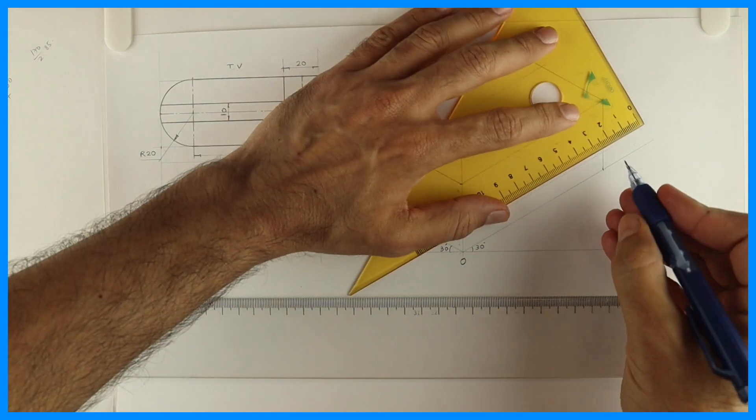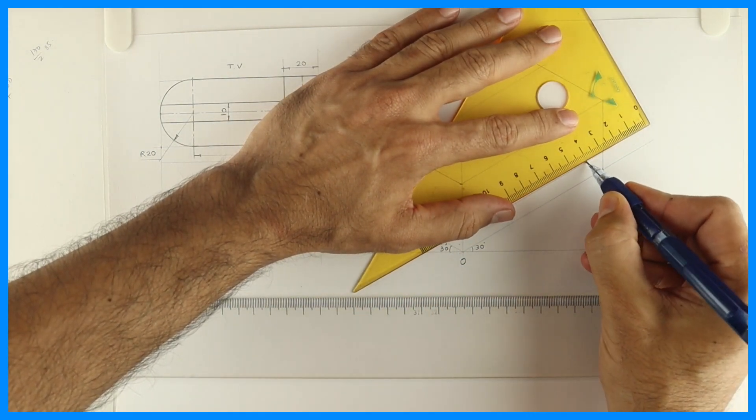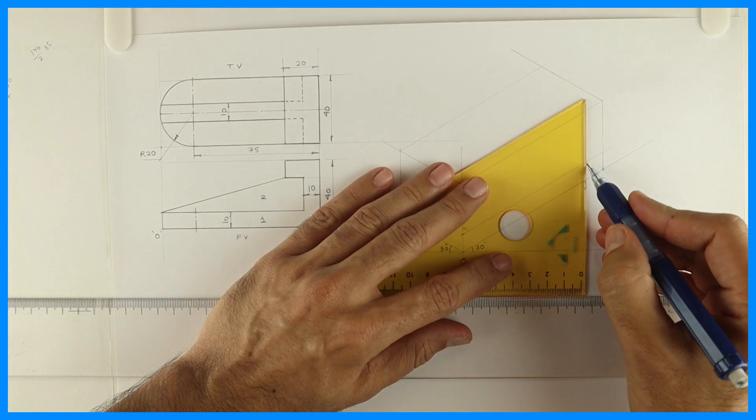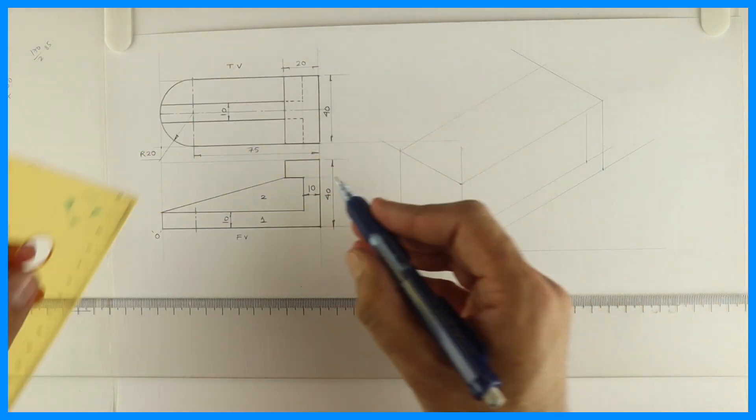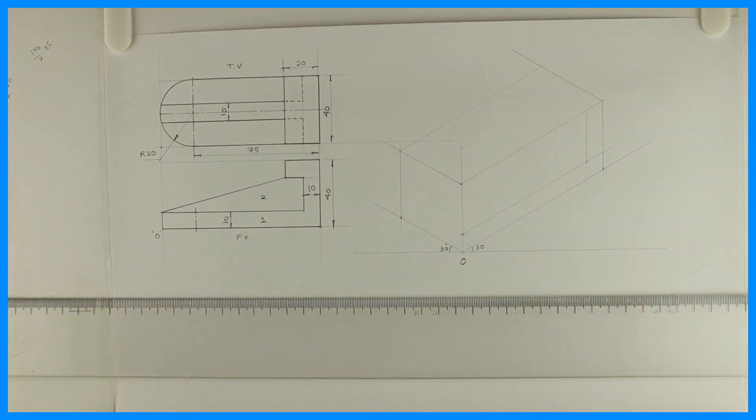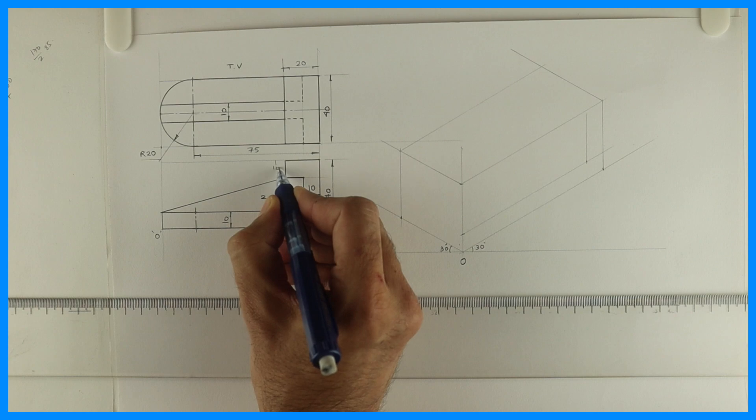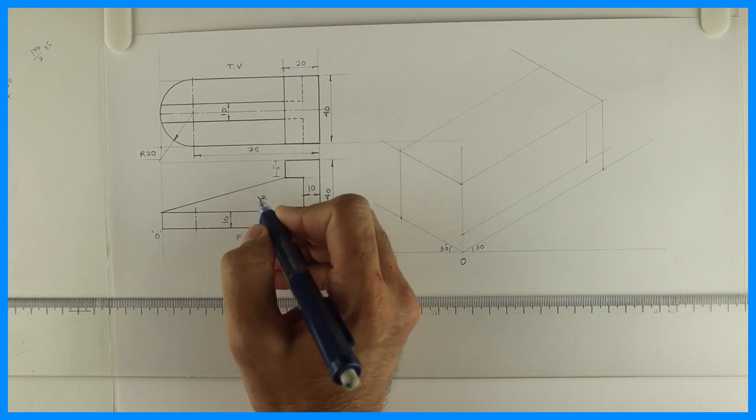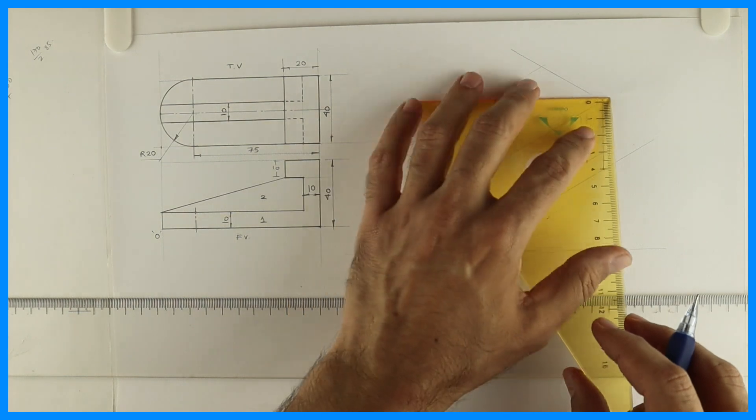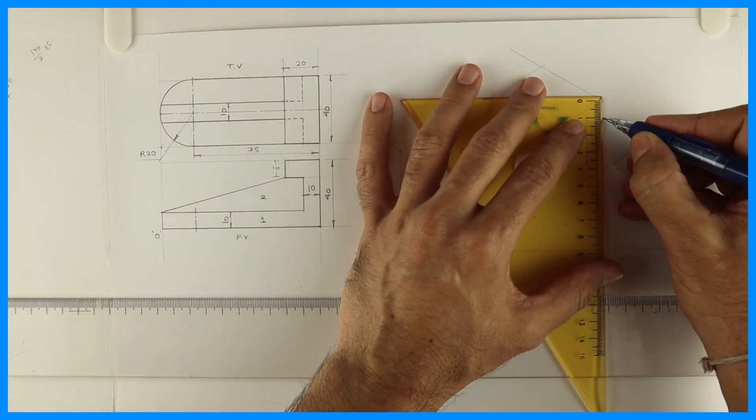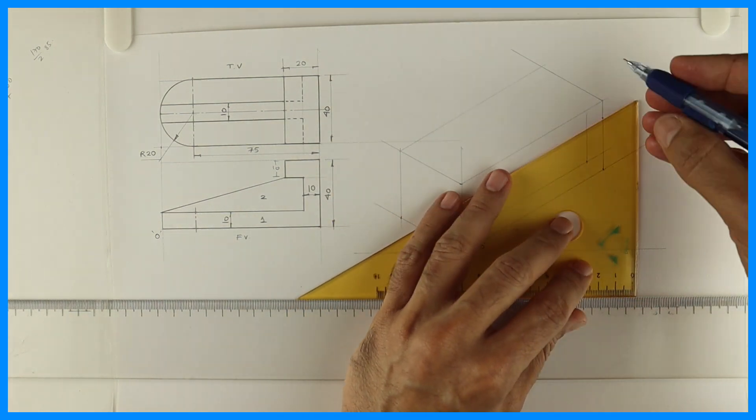We'll take height 10. How much is this? 10. So we'll take 10 from the right side and go up. This height is 10mm. I'll just write it down, so you take 10 from up and you draw a horizontal line.